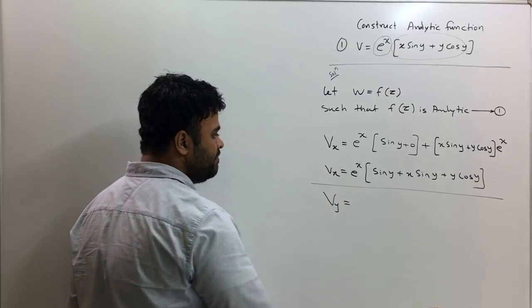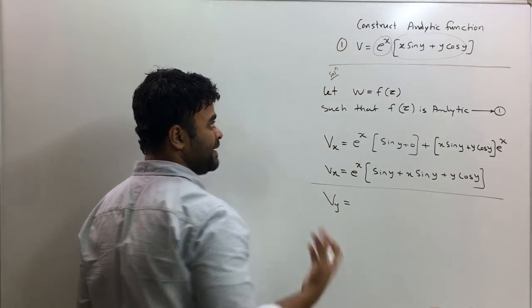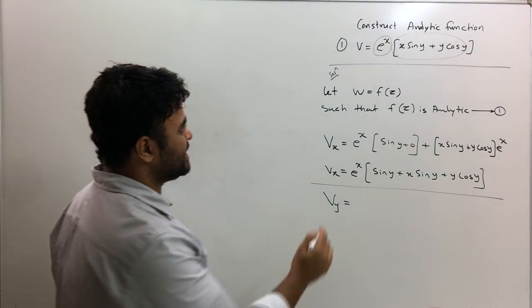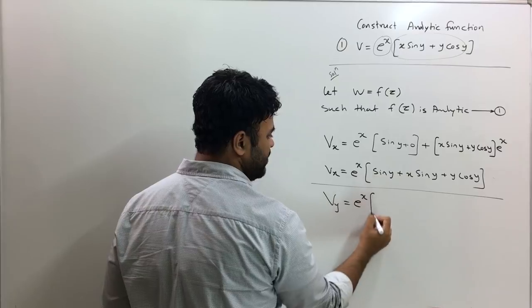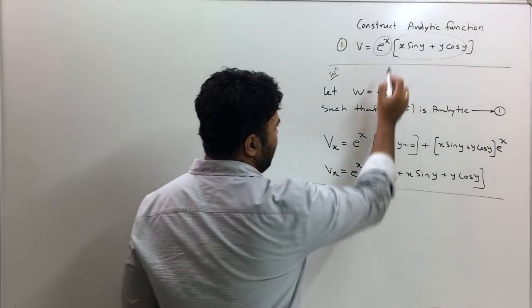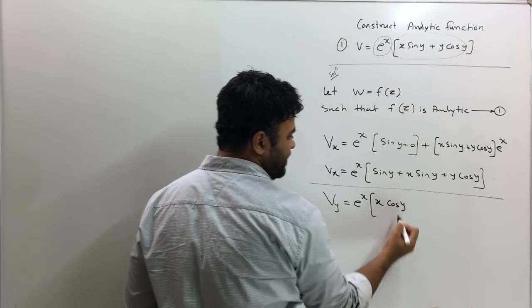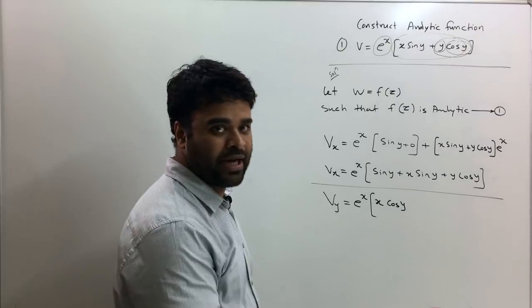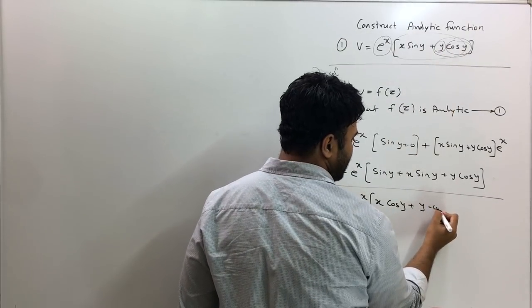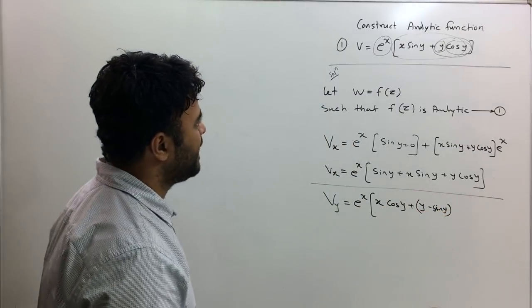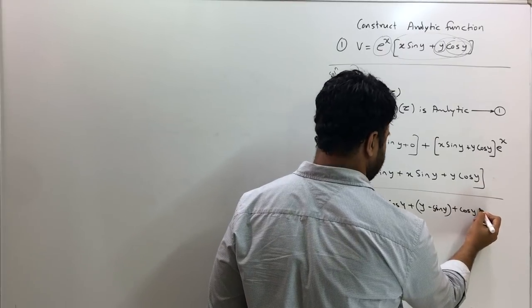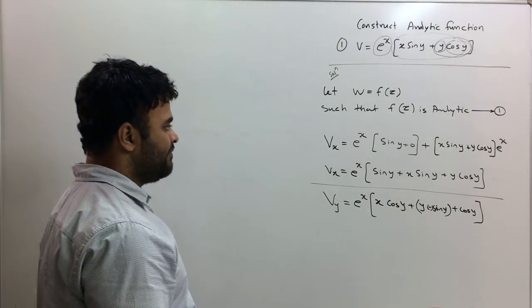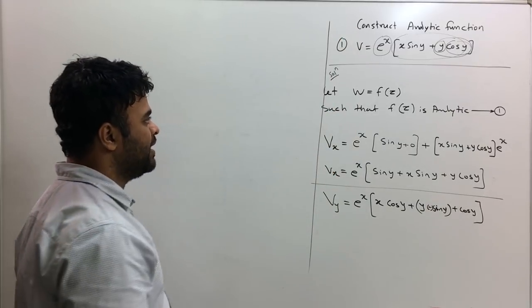Next, find Vy — differentiation of V with respect to y, treating x as constant. Taking e^x out as a constant, the derivative of x·sin(y) is x·cos(y). For the next term, applying the product rule: y times (−sin(y)) plus cos(y) times 1. So Vy = e^x(x·cos(y) − y·sin(y) + cos(y)).